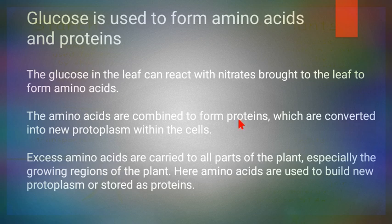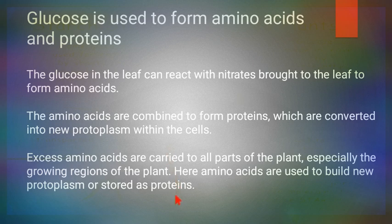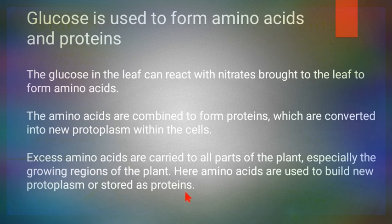Plants must obtain nitrates from the soil — from dissolved minerals — to manufacture protein. Carbon, hydrogen, and oxygen come from glucose, but nitrogen comes in the form of nitrates from soil minerals. Water and minerals from the roots travel up through xylem to the leaf, where carbon, hydrogen, and oxygen from photosynthesis combine with these nitrates to form amino acids.